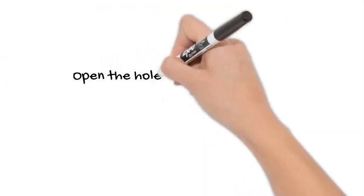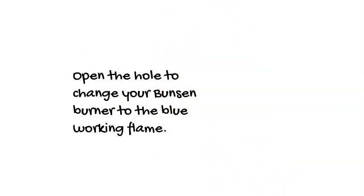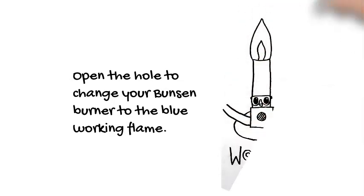To produce the working flame with your Bunsen burner, open the air hole at the bottom of the barrel. This is called a working flame and the flame we usually use to heat things in the lab. It should appear blue in color. However, the working flame is hotter than the orange safety flame.